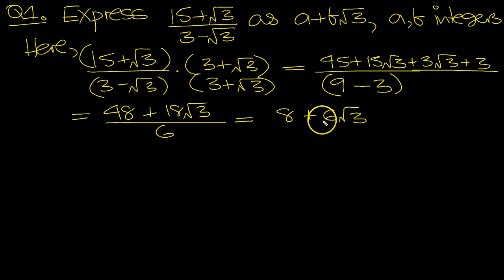Pull a 6 out of the top and bottom, you're left with 3 root 3, not a 6. So we pulled out 6, 6 eighths and 6 threes, 3 root 3s. And the 6 then cancel top and bottom. 8 plus 3 root 3, so a is equal to 8 and b is equal to 3.